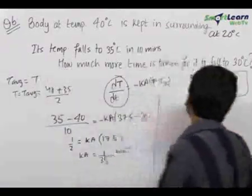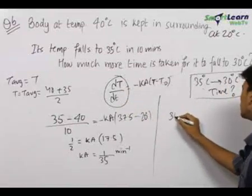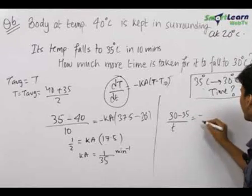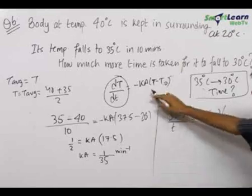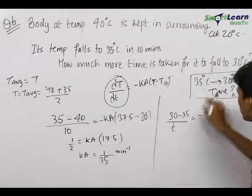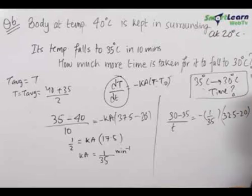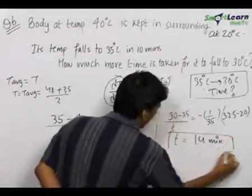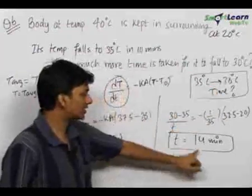Now for the second interval: dT/dt, the average rate of decrease of temperature, equals (30 minus 35) over time T, which we need to find. This equals minus KA — which we know is 1/35 — into (T minus T_naught). Since temperature is not constant, we take the average of 35 and 30, which is 32.5°C. So we write 32.5 minus 20. Solving this gives T equal to 14 minutes.